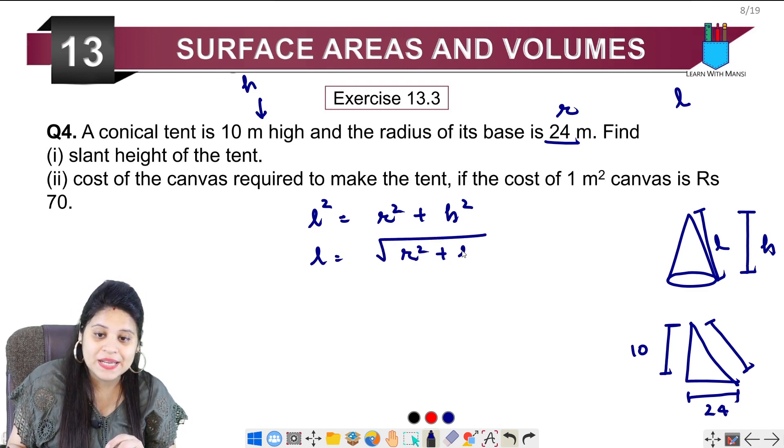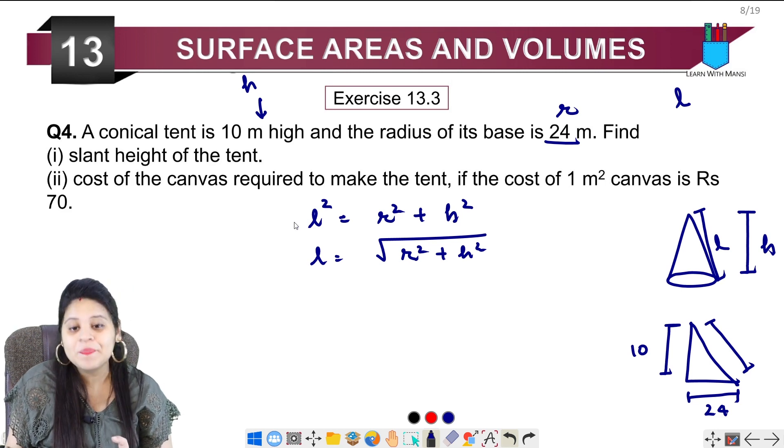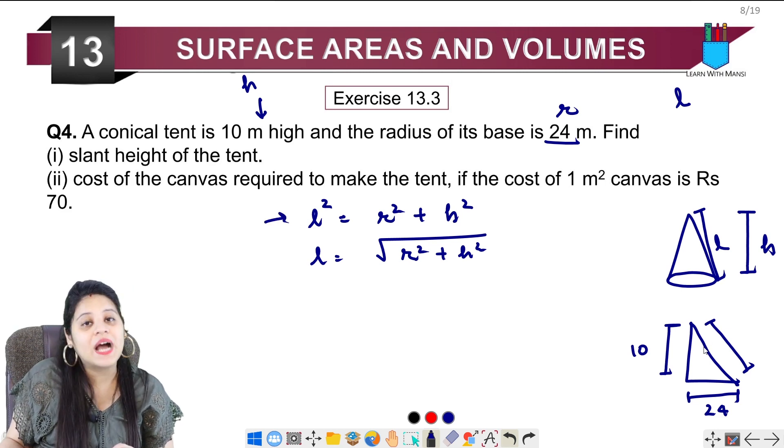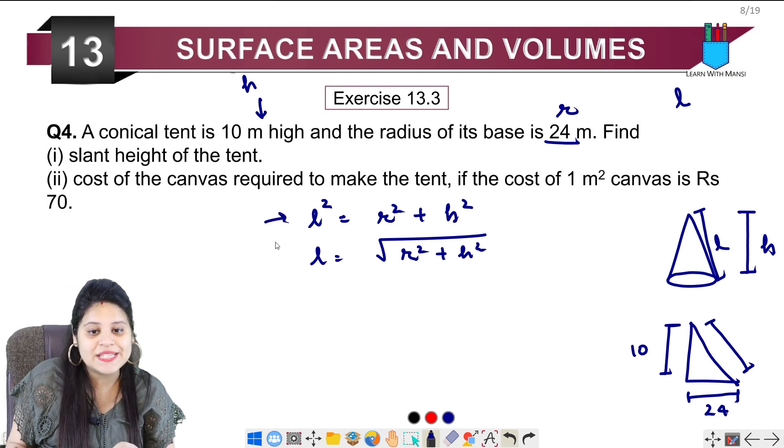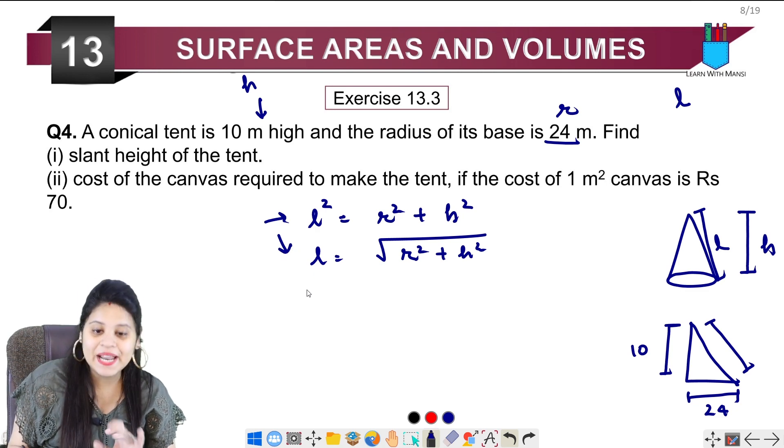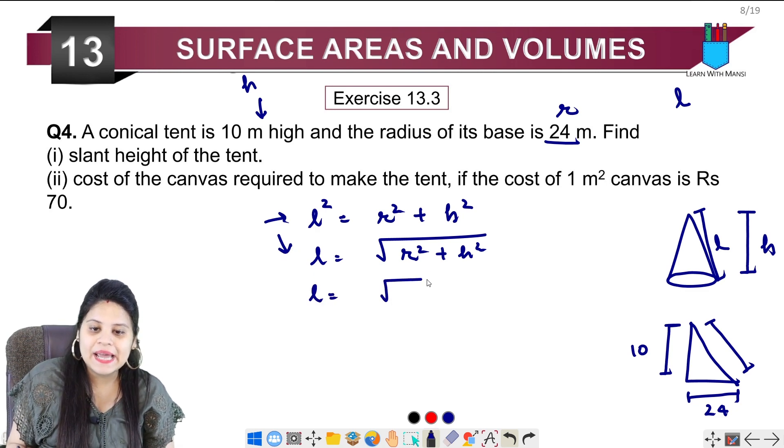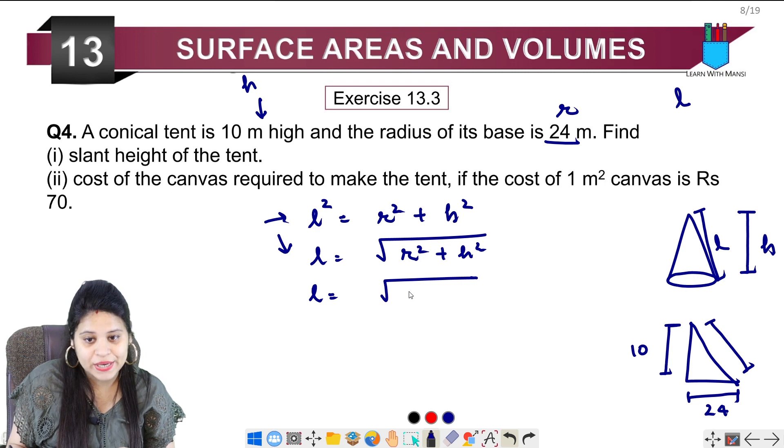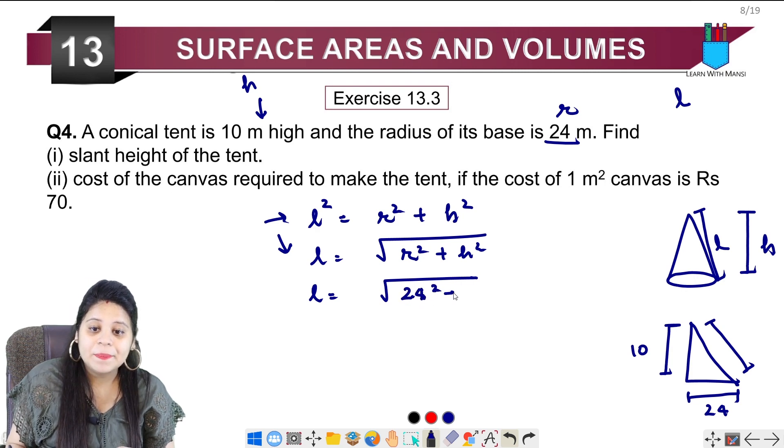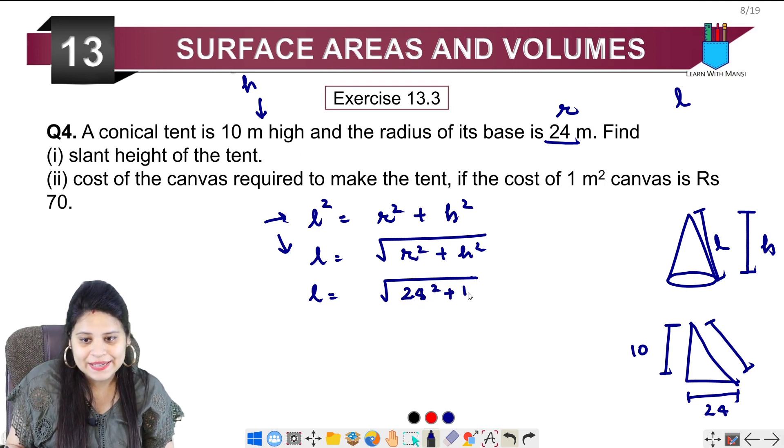Slant height l equals under root r square. It's 24 square plus height is 10 square.